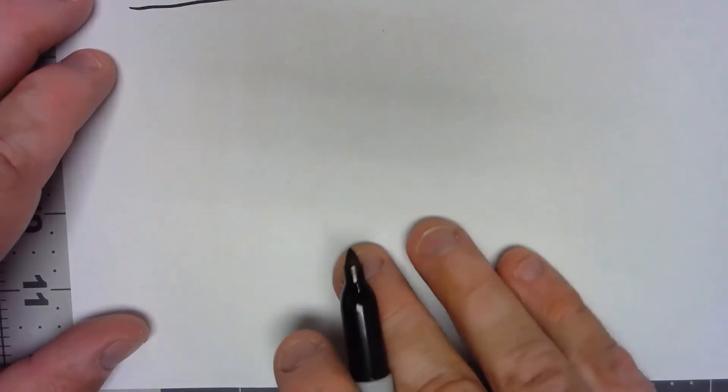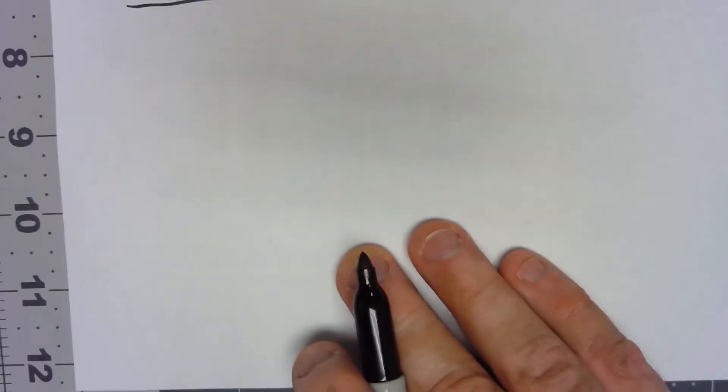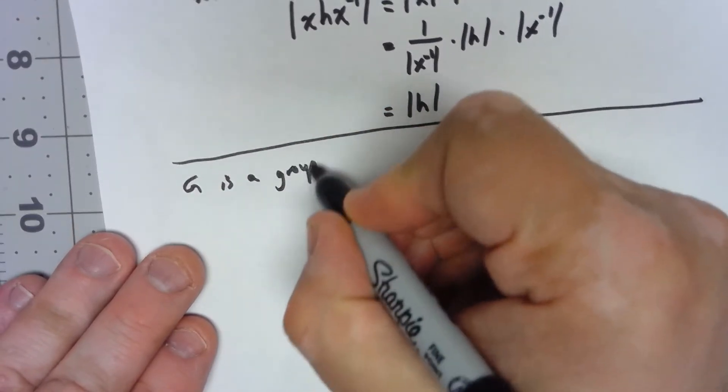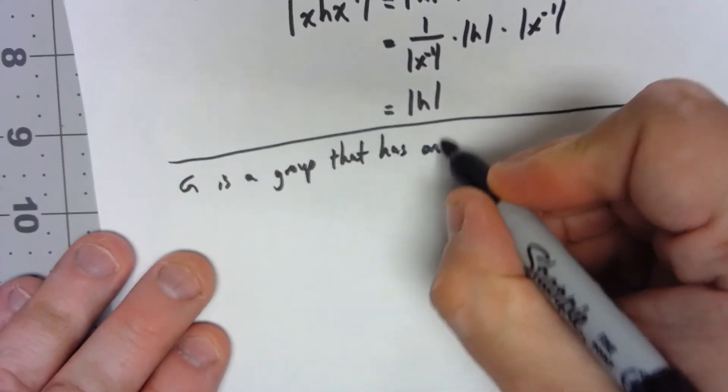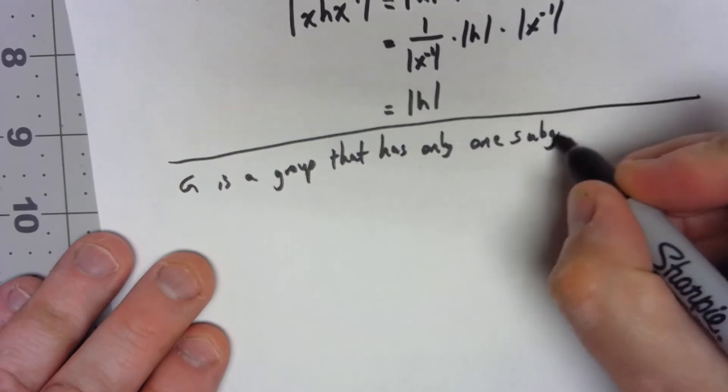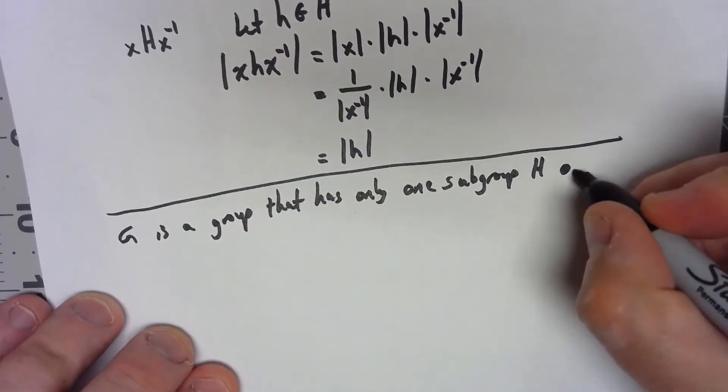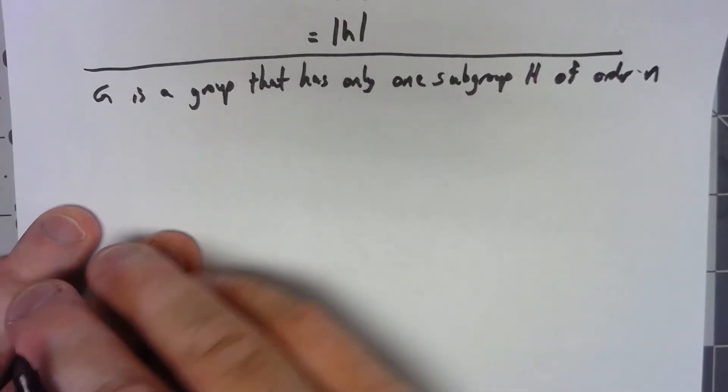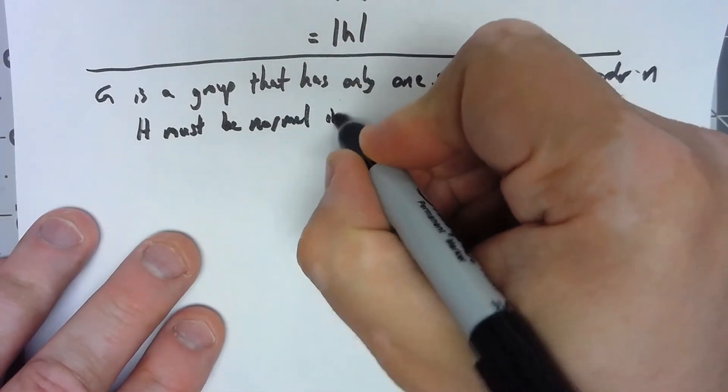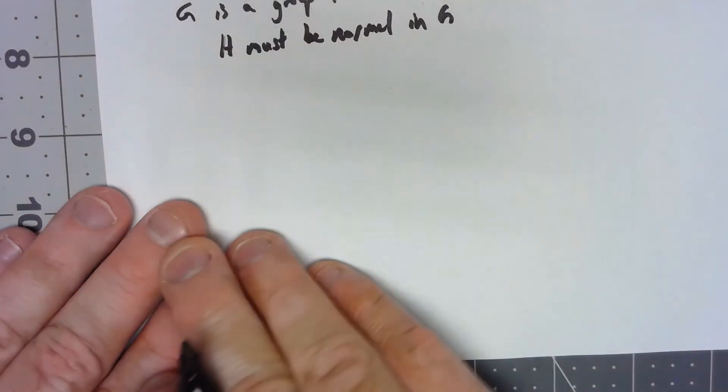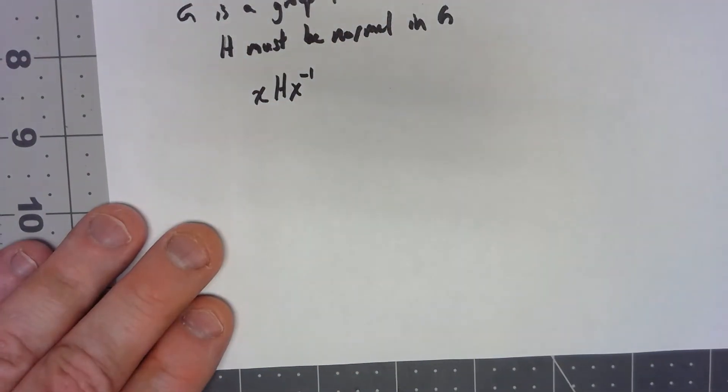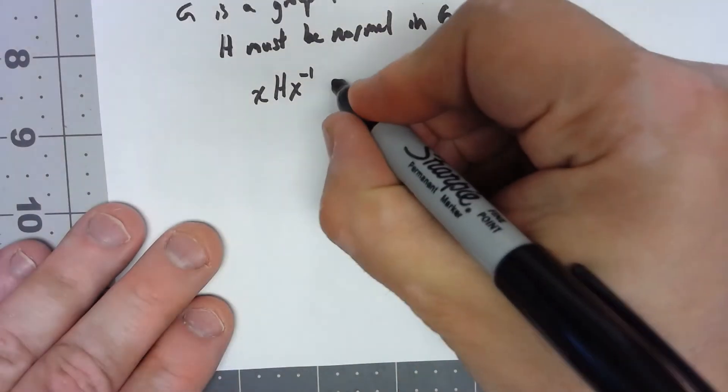Let's take a look at another example. Let's say we're looking at G as a group that has only one subgroup H of a given order, let's say order n. Then I'm going to claim that H must be normal in G. And why is that? Well, if I look at that XHX inverse thing, we actually showed this a few weeks ago that this is a subgroup of G.